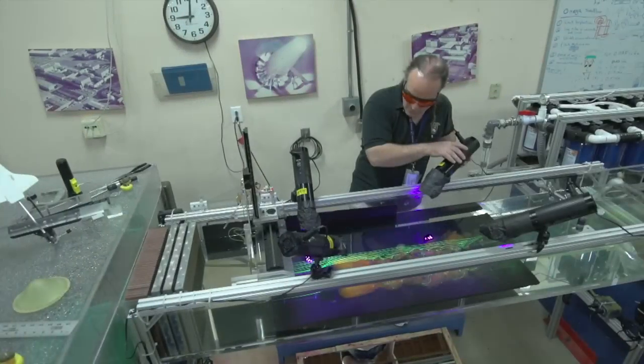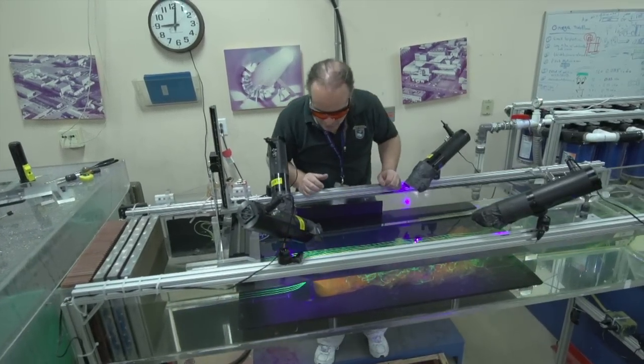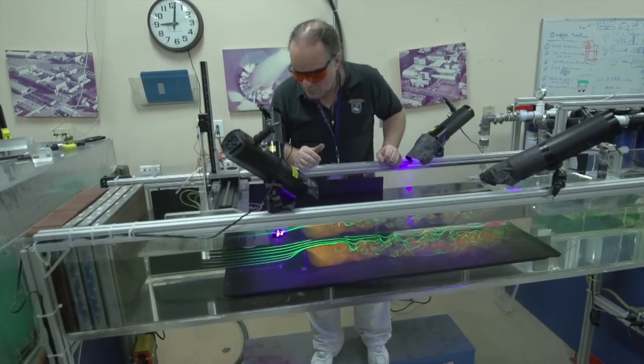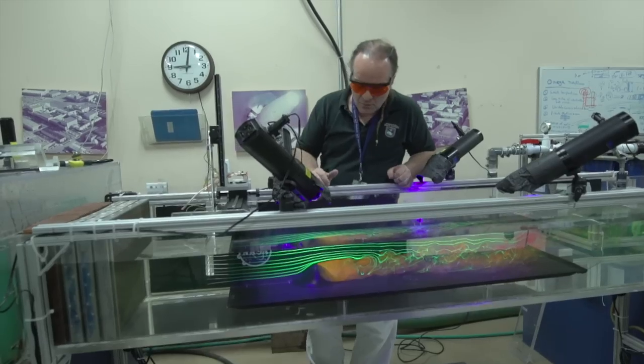So now for a water channel test, in many ways it's very similar to a wind tunnel test. We design a model, make sure that it's able to accommodate being submerged in water. We then go build the model, we then mount it into the water channel and then we start the water flowing.